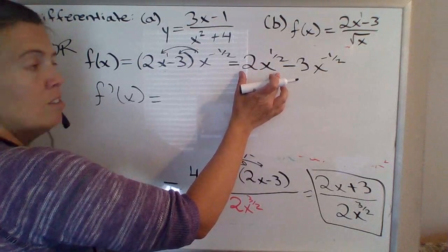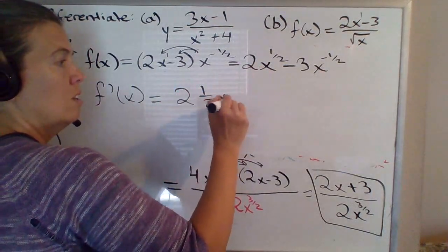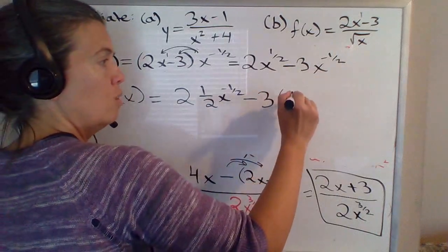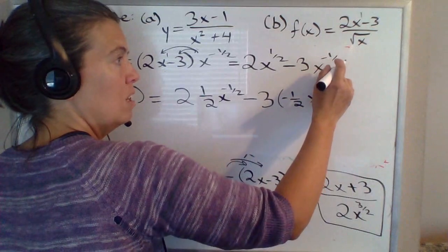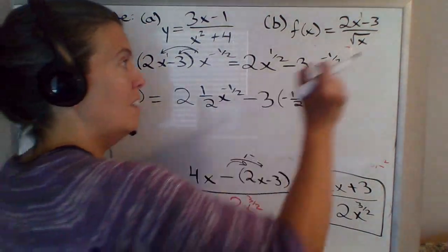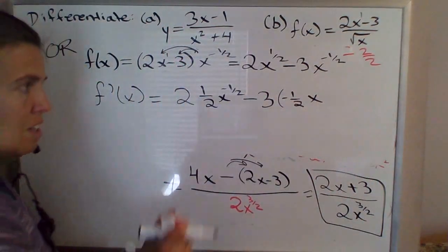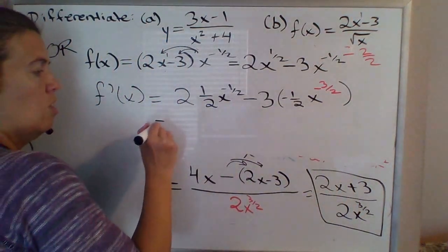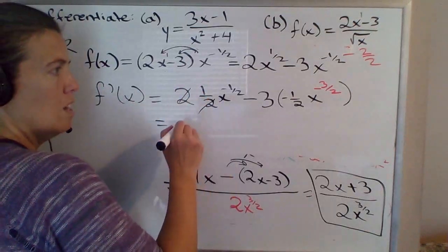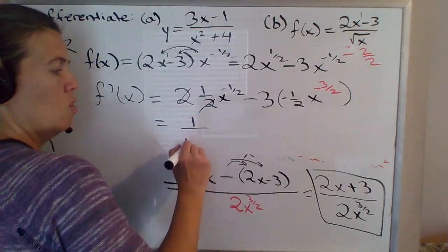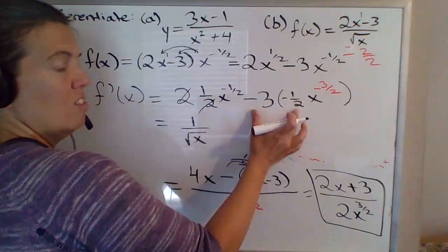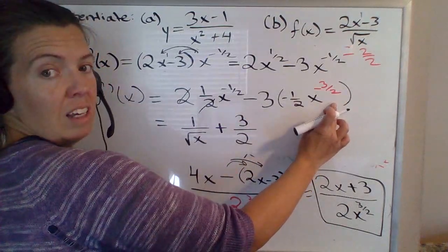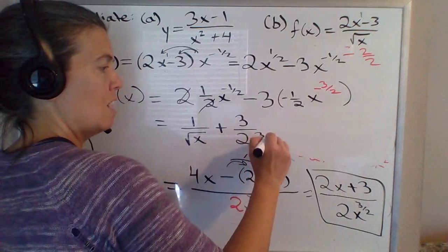So we just take the derivative: 2 times the 1 half comes down, take 1 away from the exponent. Then the same deal here — minus 3, power rule, so the negative 1 half comes down. Take 1 away from the exponent: negative 1 half minus 1 is negative 3 over 2. So 1 half times 2 is just 1 — x to the negative 1 half, which I'll switch back to 1 over square root of x. This times this will give me positive 3 over 2, and x to the negative 1 half gives x to the positive 3 halves in the denominator.